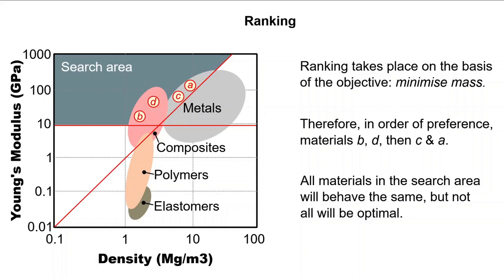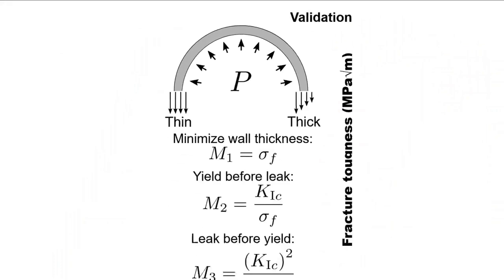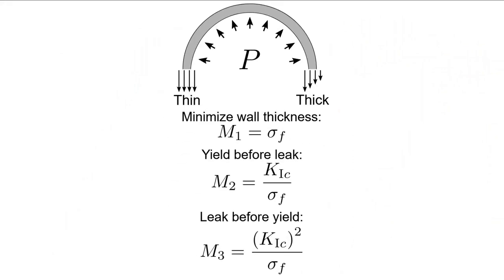What happens if we need to consider multiple performance indices? If you recall the basics of pressure vessels from an earlier lecture, there are three main performance indices that can be employed when selecting a material for them.